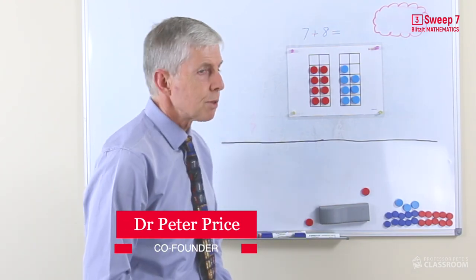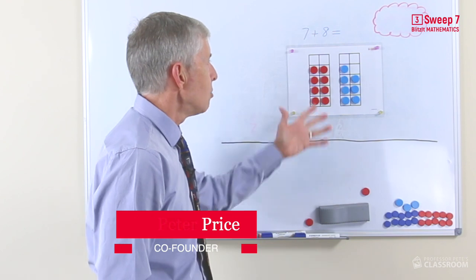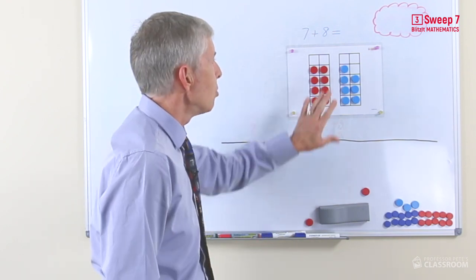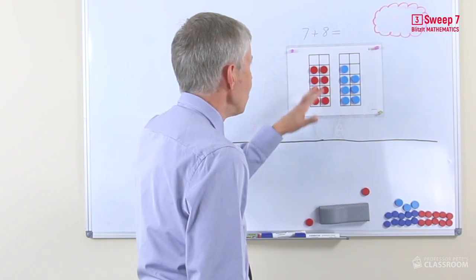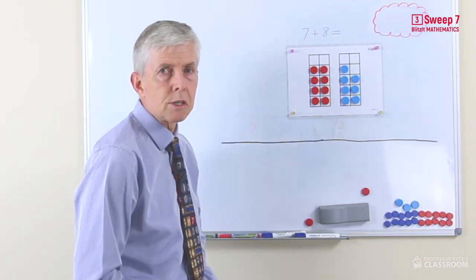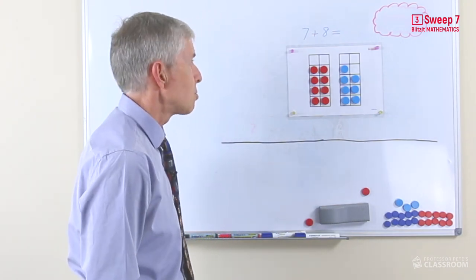So here's our first example, 7 plus 8. Again we can use the double 10 frame, again we're going to put the 8 on the left hand side and we'll ask the students if we're just using the materials to visualize what the answer will be.